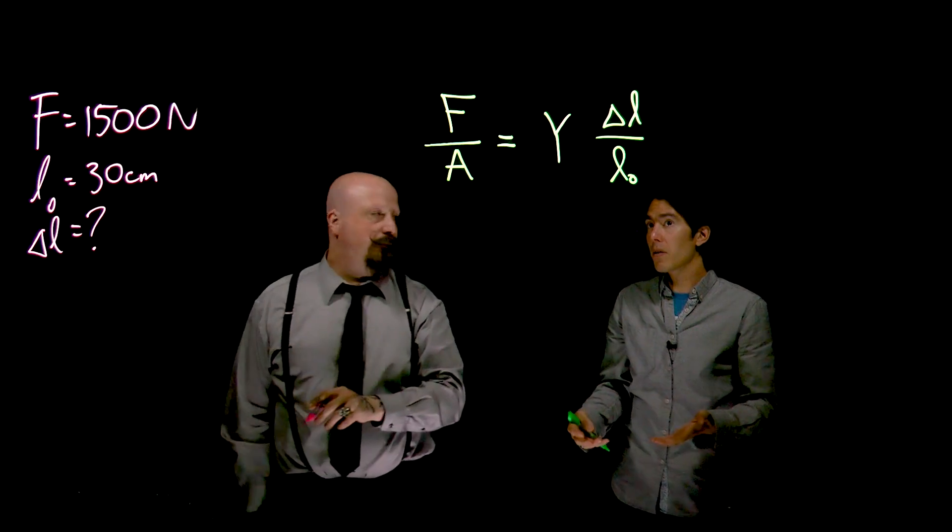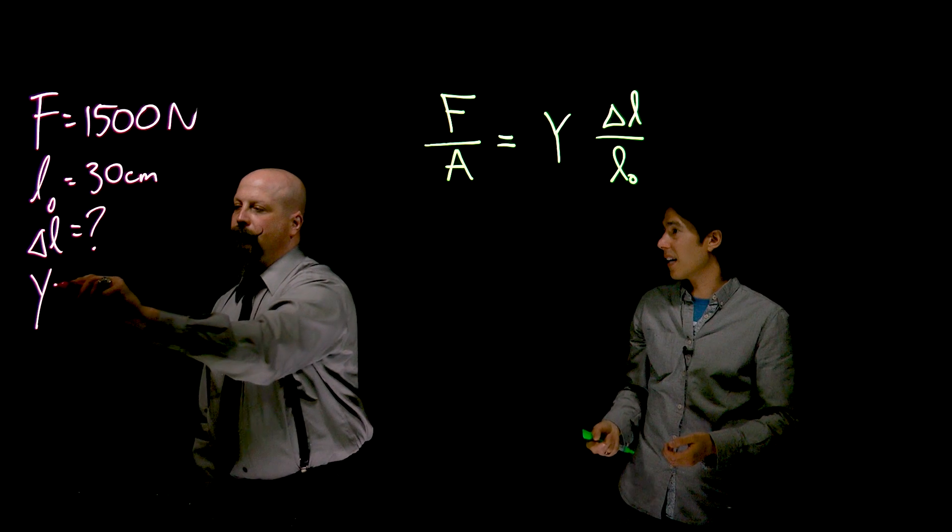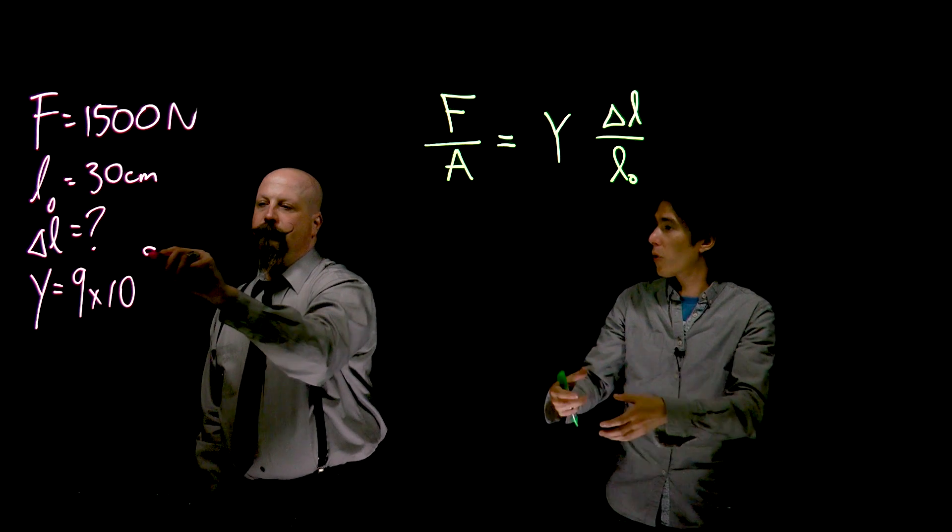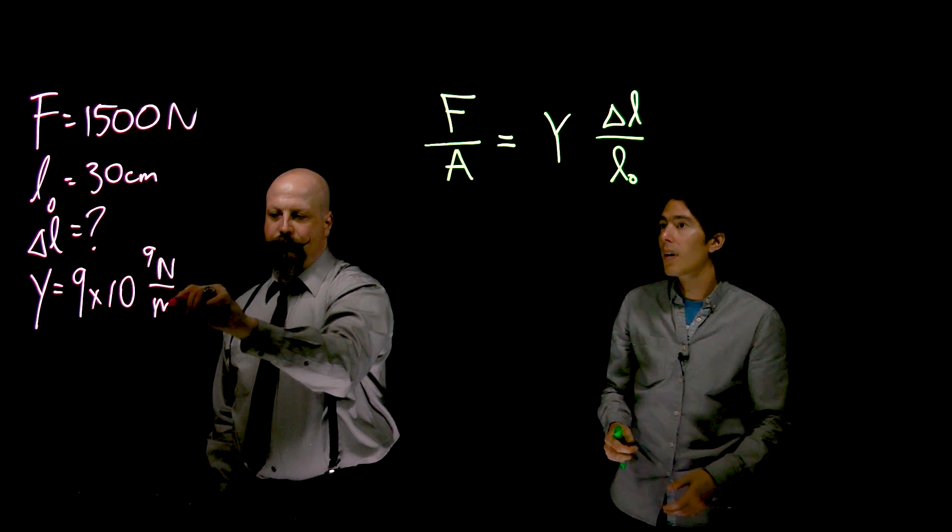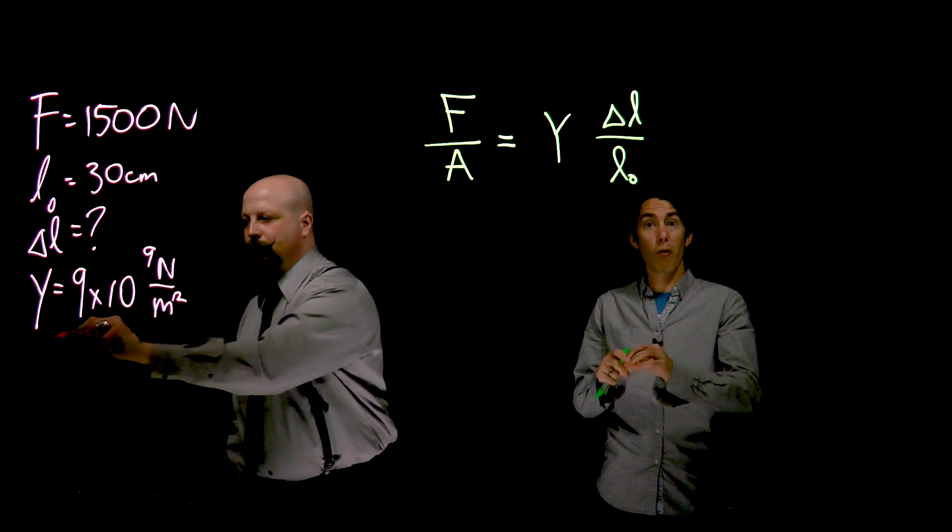Bone is elastic, like many other materials. And the Young's modulus for that is 9 times 10 to the 9 Newtons per meter squared. So it's a force per unit area. And then finally, the cross-sectional area of your femur is typically about 4 square centimeters.